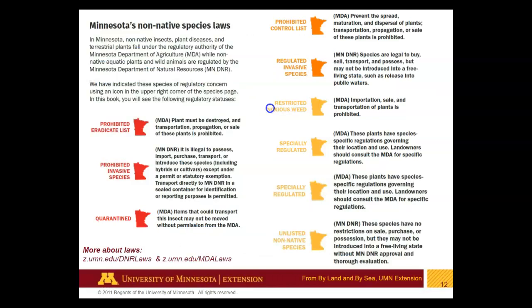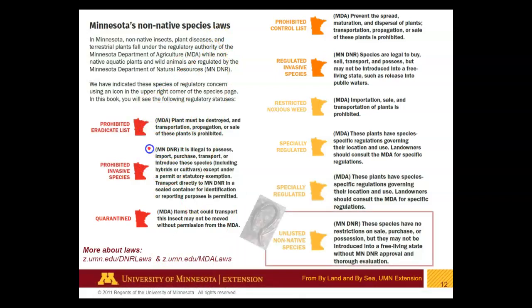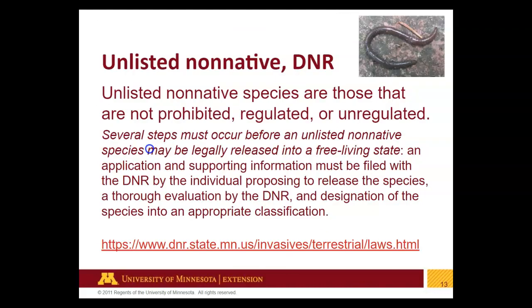In order to manage this problem, Minnesota has enacted quite a number of regulations. The Minnesota Department of Agriculture and the DNR are both important players. Jumping worms fall under the 'unlisted non-native species' category of the DNR — those that are not prohibited, regulated, or unregulated; it's kind of a catch-all. Several steps must occur before an unlisted non-native species may be legally released into a free-living state. It is illegal to knowingly introduce worms into the state of Minnesota. We have no native earthworms at all in Minnesota, so any worms you find are invasive — jumping worms are just the newest.